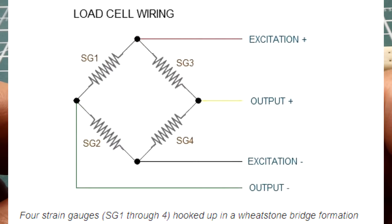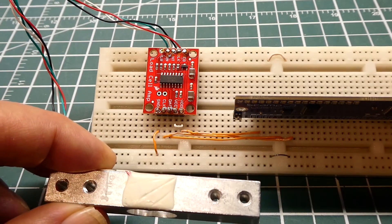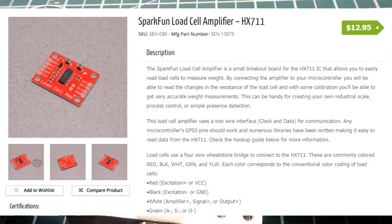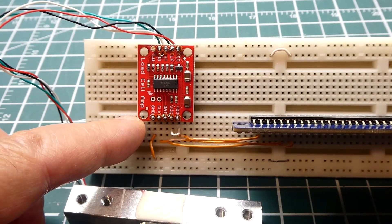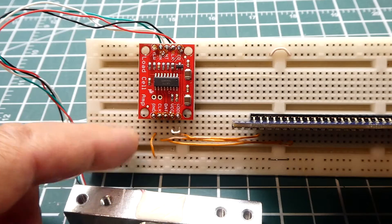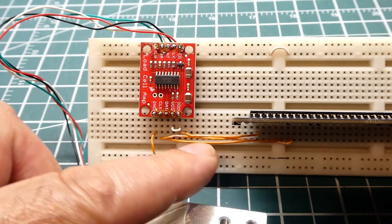Now there's four wires feeding this load cell. Two are the excitation voltage which could be 3.3 volts or 5 volts, and I'm using 3.3 volts in this video. Then the two output wires are the green and white, and they're fed into this HX711 breakout board which is a load cell amplifier and the output is a 24-bit ADC. So we extract the load cell data through the 24-bit ADC into the microcontroller.